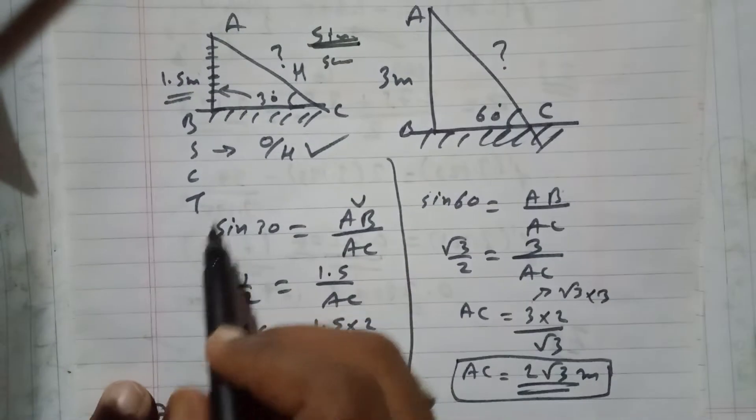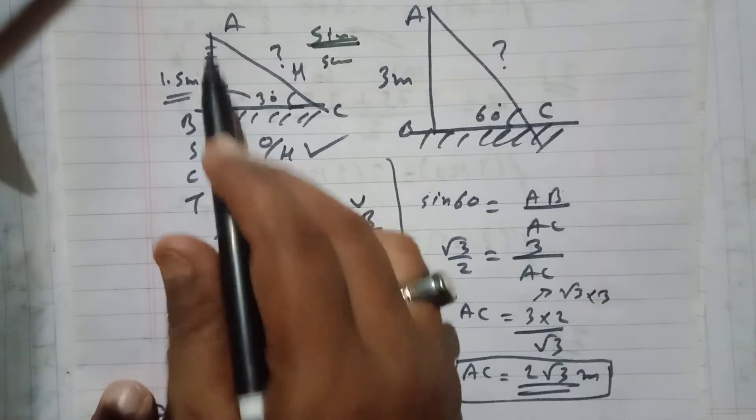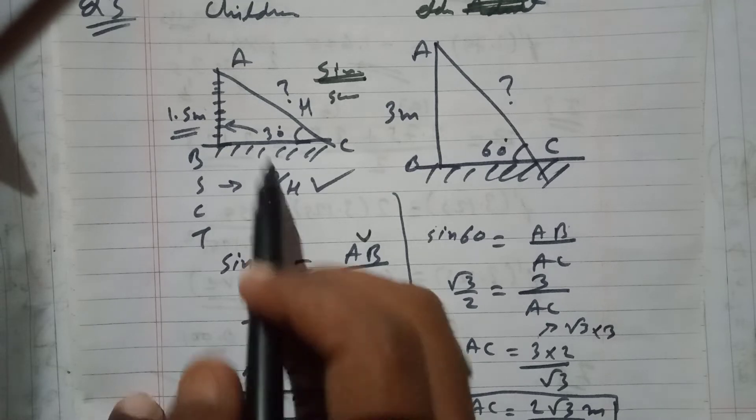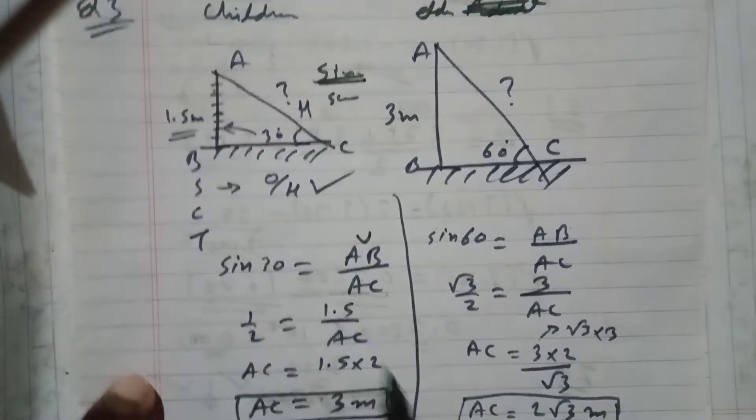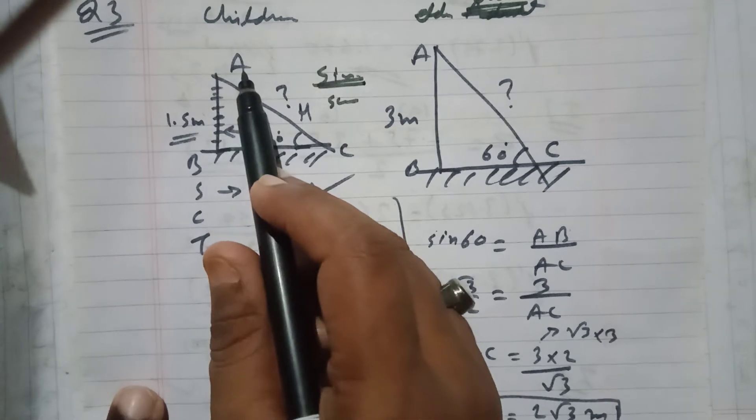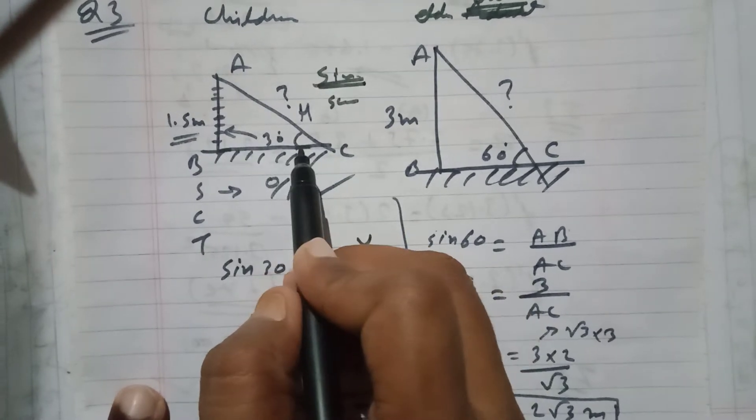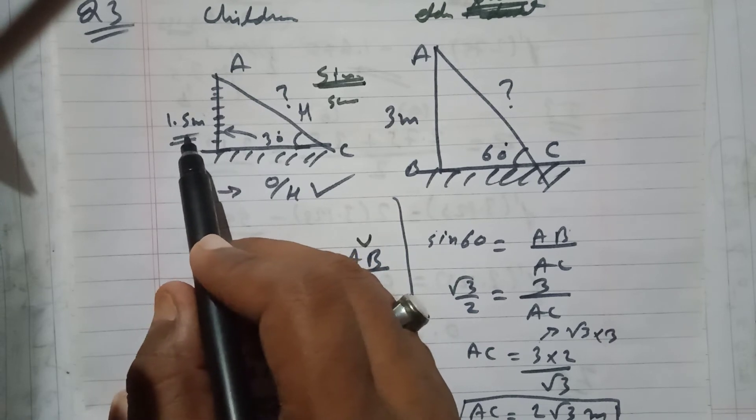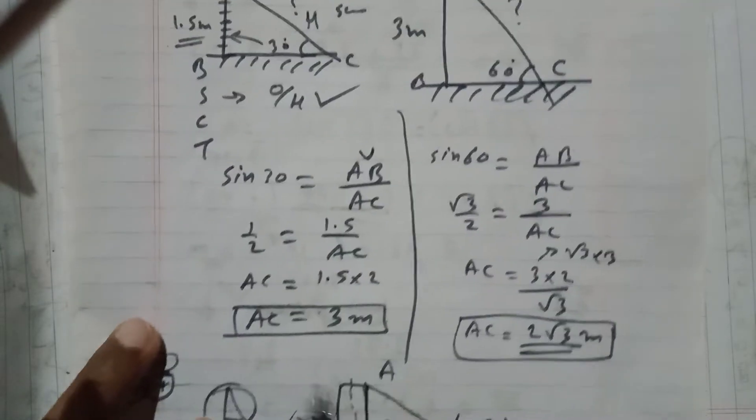In sine formula we have hypotenuse AB, which is the opposite side AB, and hypotenuse AC. So I have to use the sine formula to calculate the length of AC. Here is a diagram, triangle constructed with the name A, B, and C. The angle is 30 degrees here and height of the slide is 1.5 meters.